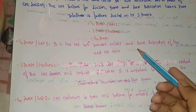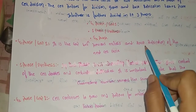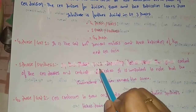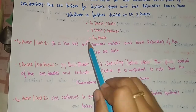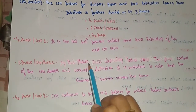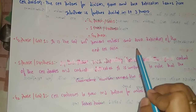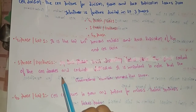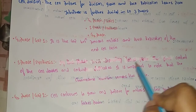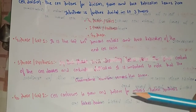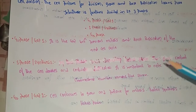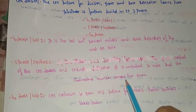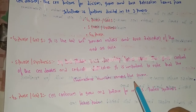G1 phase is the gap between the previous mitosis and DNA replication of the next cycle. In S phase, or Synthesis phase, DNA replication takes place. The DNA content of the cell doubles and centrioles duplicate. Importantly, the chromosome number remains the same.